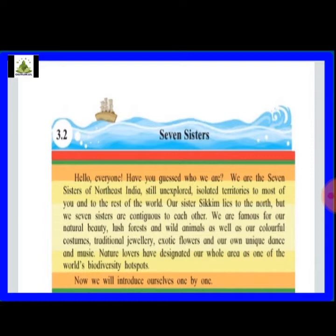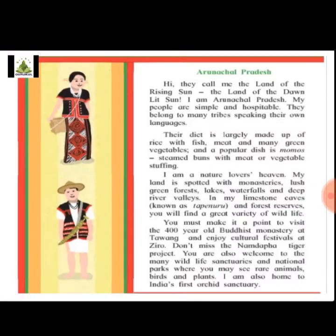'Our unique dance and music — nature lovers have designated a whole area as one of the world's biodiversity hotspots,' meaning it is very beautiful and tourists are attracted to this place. 'Now we will introduce ourselves one by one.' Each state will be introduced individually, covering what kind of food the people eat, what traditions and culture they follow, and what festivals they celebrate. Let us begin with the first state — Arunachal Pradesh.